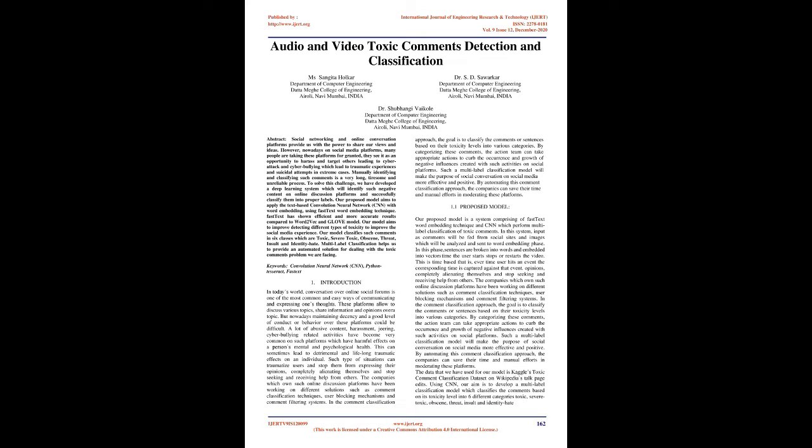Our model classifies such comments in six classes which are toxic, severe toxic, obscene, threat, insult and identity hate. Multi-label classification helps us to provide an automated solution for dealing with the toxic comments problem we are facing. Keywords: Convolution Neural Network (CNN), Python Tesseract, FastText.